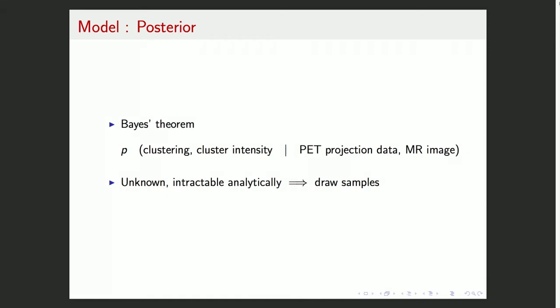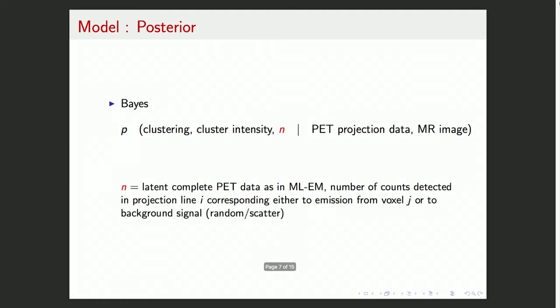How do we get the posterior? We use the Bayes theorem and our posterior is the probability of these clustering and cluster intensity given the PET projection data and the MR image. Analytically, we can't really solve for this, so we're going to draw samples from this distribution in order to characterize it. We have a little trick here, which is the same as in usual MLEM PET reconstruction, which is that we used a latent or hidden variable which represents the number of emissions corresponding to a voxel and detected in a line of response.